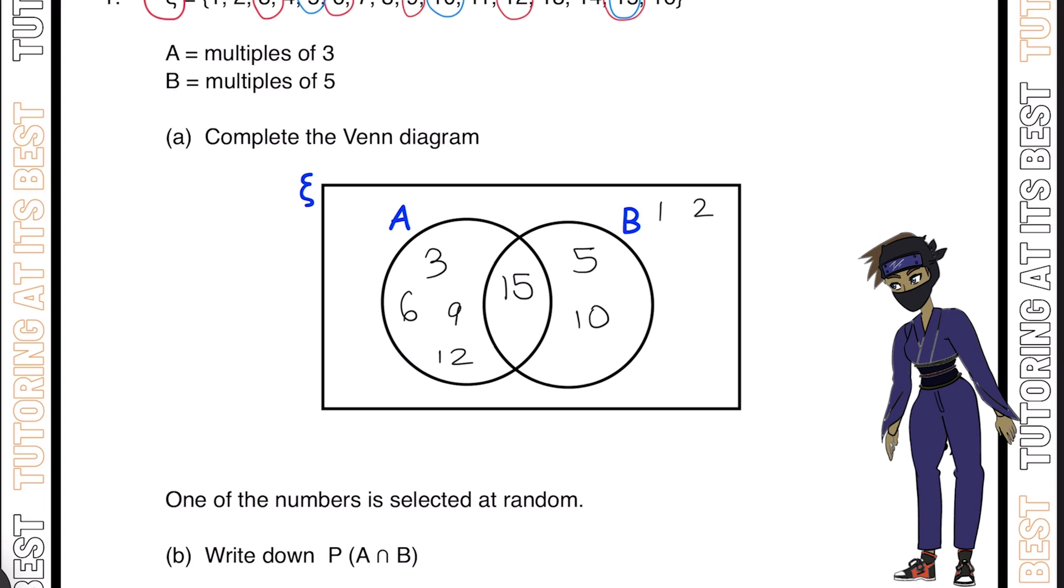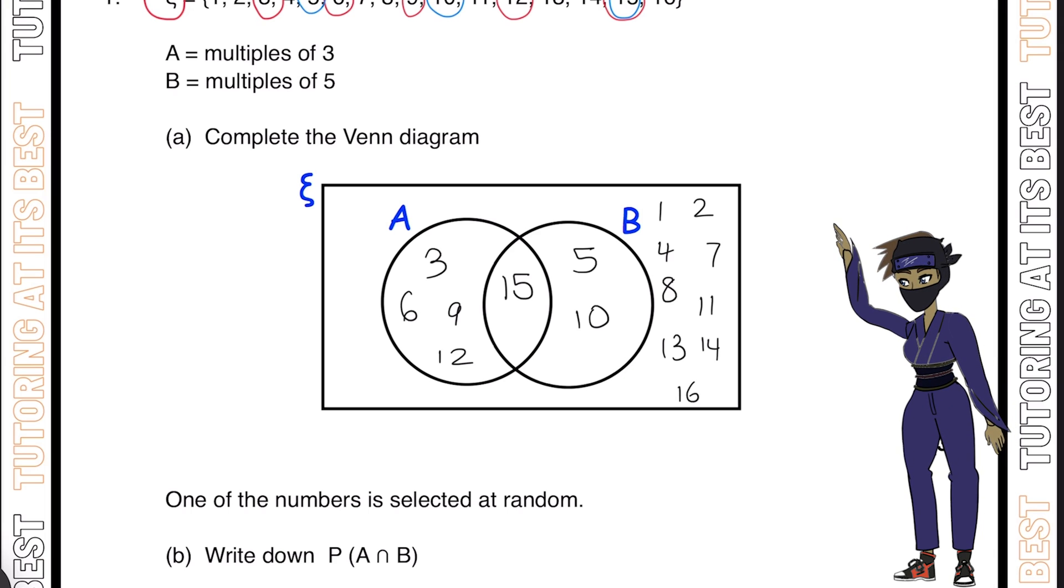But what happens to the remaining numbers that weren't circled? They would go outside of the Venn diagram but still within the rectangular box. So that's 1, 2, 4, 7, 8, 13, 14, and 16. That gives us 3 marks in the bag.